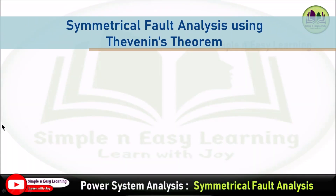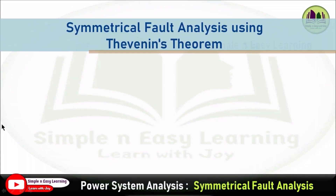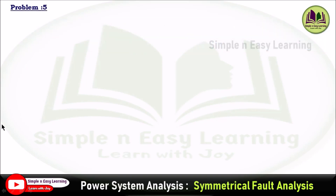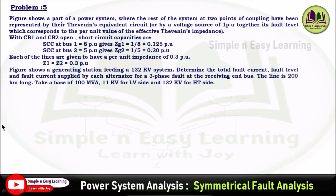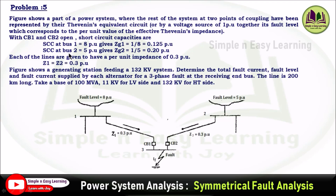Symmetrical fault analysis using Thevenin's theorem, problem number 5. The circuit shows a part of a power system where the rest of the system at two points of coupling have been represented by the Thevenin equivalent circuit — a voltage source of one per unit together with its fault level, which corresponds to the per unit value of the effective Thevenin impedance.